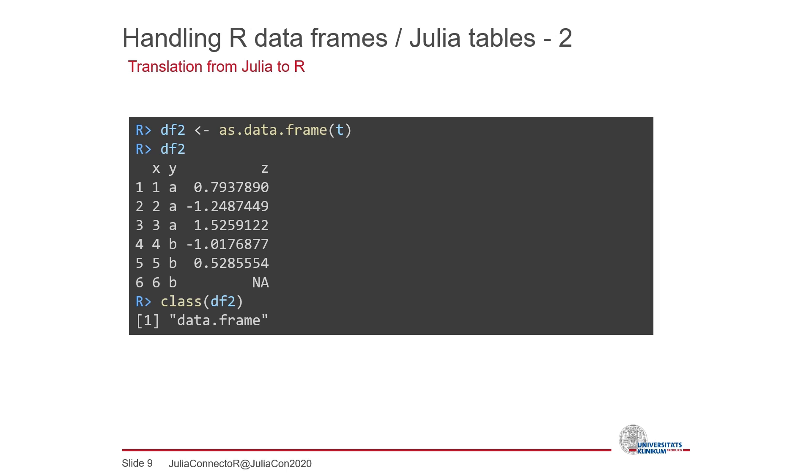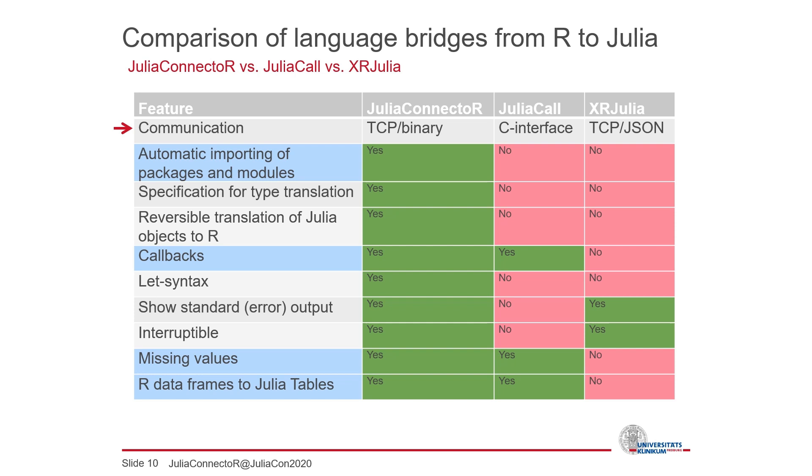You have now seen the features that are highlighted here in blue in this table. This feature matrix shows the most important features of the JuliaConnector, and compares them with two other R packages that aim at integrating Julia in R, namely JuliaCall and XRJulia.